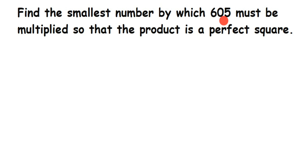This type of question is really important. They may change the number but the type of question remains the same. They may ask you to find the smallest number to be multiplied, or sometimes to find the smallest number to divide. For both multiplication and division, you have to use the prime factorization method.